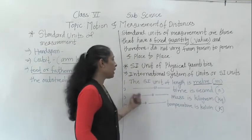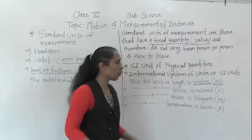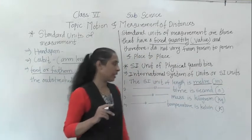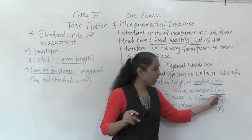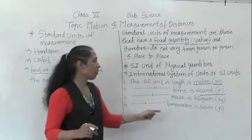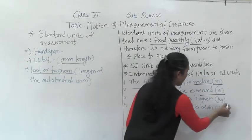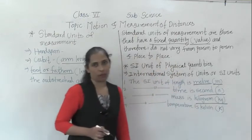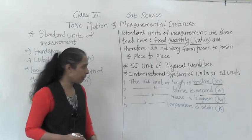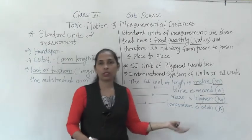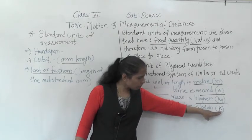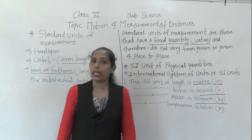The SI unit of time is second, shown with the small letter s. The SI unit of mass is kilogram, abbreviated as kg — both in small letters. If you want to measure temperature, the SI unit of temperature is kelvin, shown with a capital K.